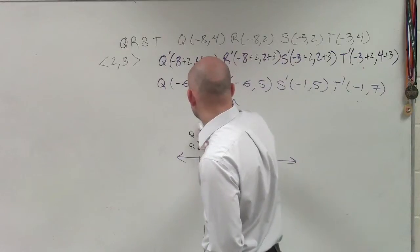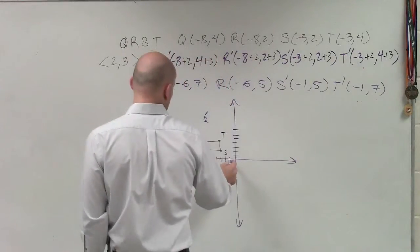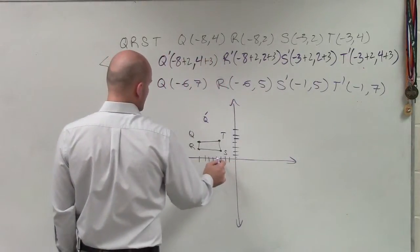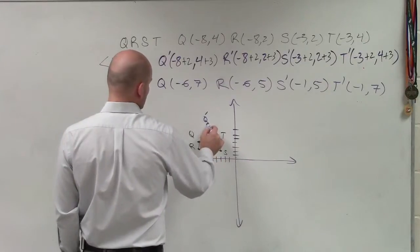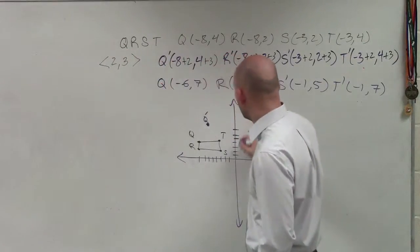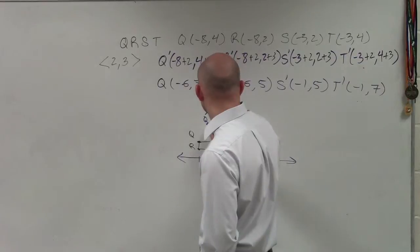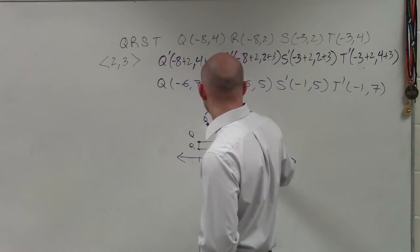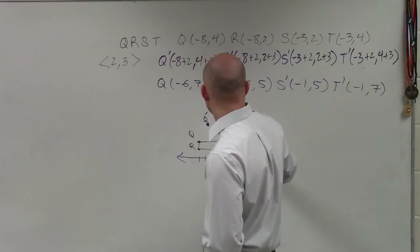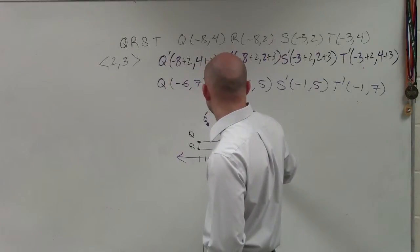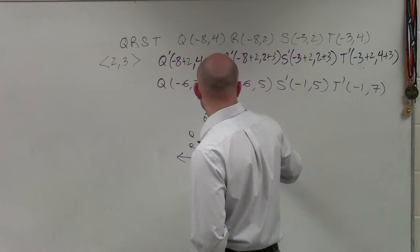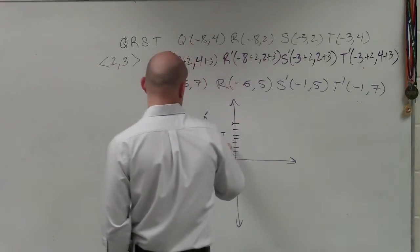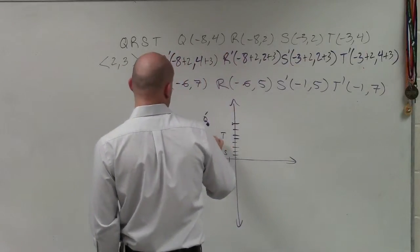That's negative 6, 1, 2, 3, 4, 5, 6, that should be like over there. Okay, that's Q prime. So I have R prime is negative 6, 5.